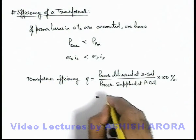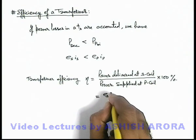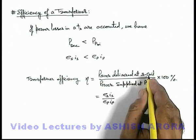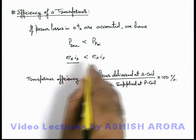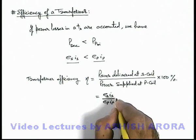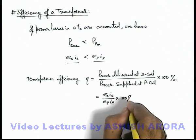This we can write as Es·Is divided by Ep·Ip, because we know power delivered at secondary coil is Es·Is and that supplied to primary coil is Ep·Ip, multiplied by 100 percent.